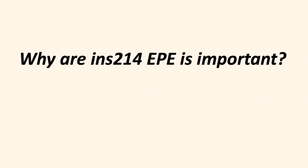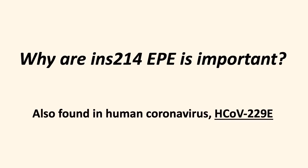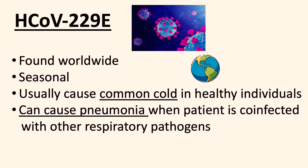So why are these three amino acid insertions so important? That is because they are also found on the spike protein of another human coronavirus, the HCoV-229E. Human coronavirus 229E can be found worldwide and has a seasonal pattern. It usually causes the common cold in healthy individuals, but can also cause pneumonia when co-infecting people with another respiratory pathogen.